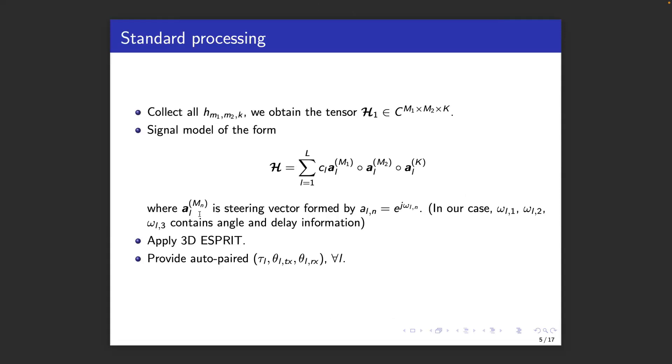Suppose now that the transmitter sends a sufficient number of pilot signals so that the receiver can estimate the complex tensor. This can be done, for instance, using least squares techniques. We can then decompose the tensor in a standard form using an outer product of steering vectors in the different dimensions. Each of the steering vectors has a similar structure but different interpretation. They can refer to angles and others to delay.